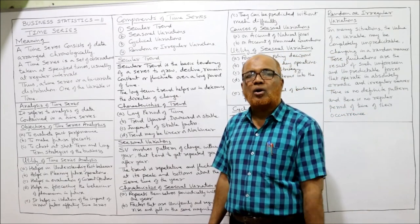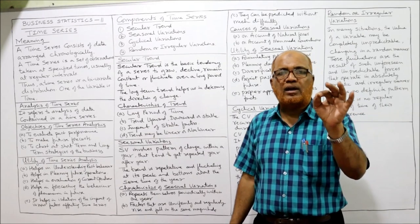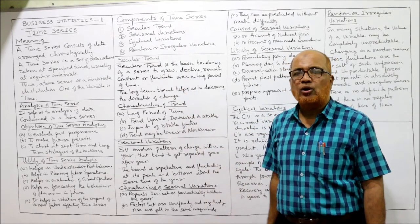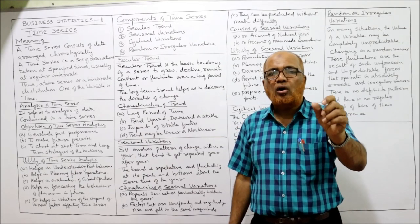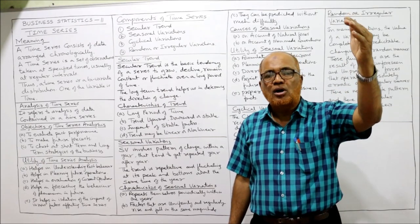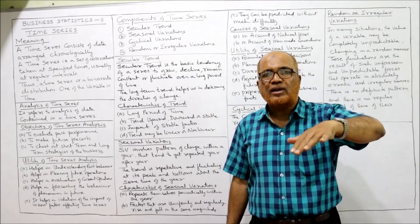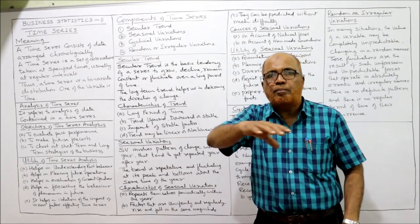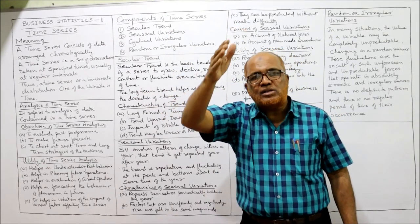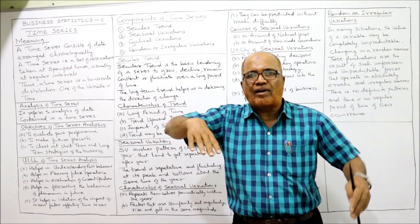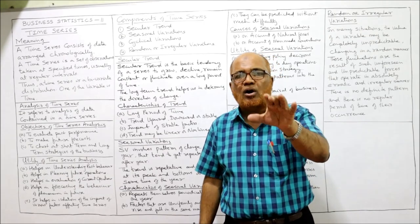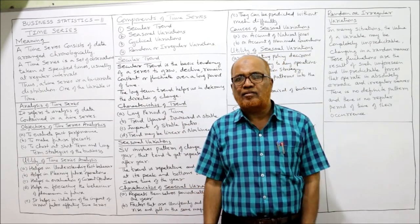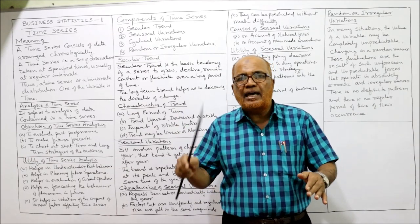In examinations, very frequently a question is asked: explain the components of time series. The first component is secular trend. The secular trend shows the long-term tendency of the value either to increase, decrease, remain constant, or fluctuate. In a long period of time, what is the behavior of the value — whether the values are continuously increasing, declining, remaining constant, or fluctuating — that long-term tendency is called secular trend.